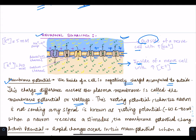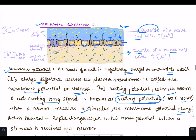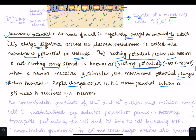This potential when the neuron is not sending any signal is known as resting potential, and this is minus 60 to minus 80 millivolts. When a neuron receives a stimulus, the membrane potential changes. What is action potential? Rapid changes occur in the membrane potential when a stimulus is received by a neuron, and this is known as action potential.